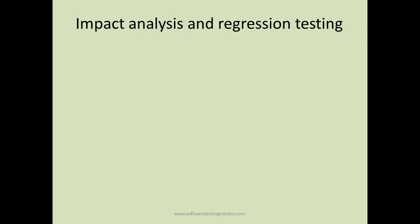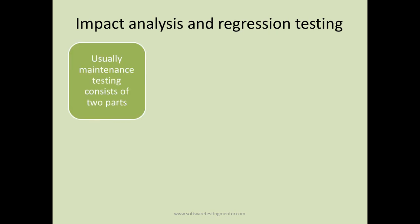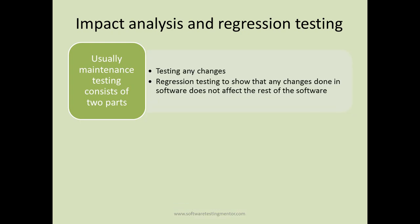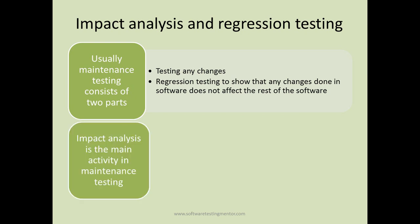Maintenance testing typically consists of two parts: first, testing any changes made to the software, and second, regression testing to show that those changes do not affect the rest of the software. So in any maintenance testing cycle, you test the change and then perform regression testing to ensure no new defects or failures have been introduced.